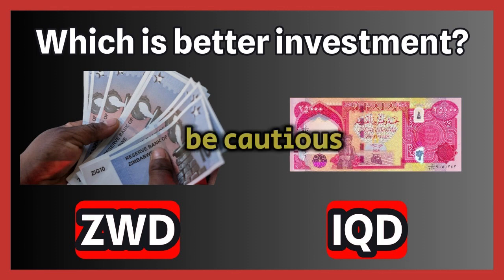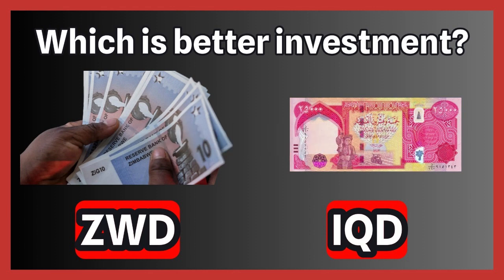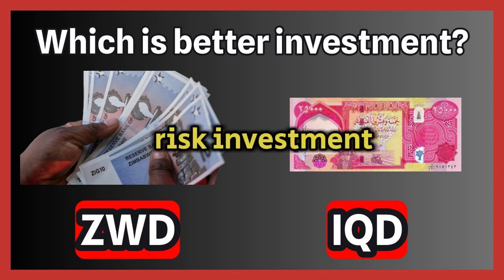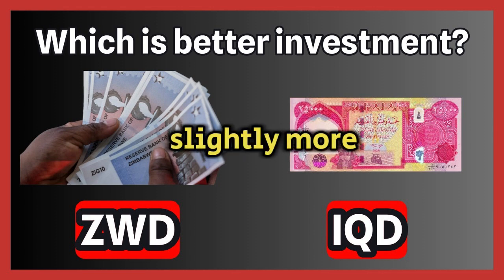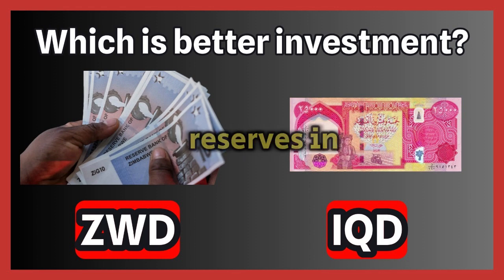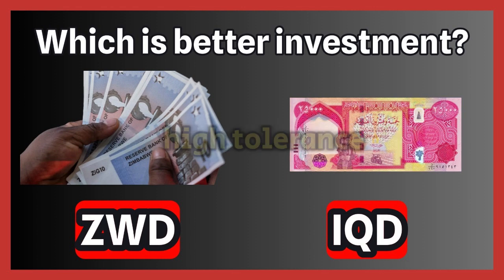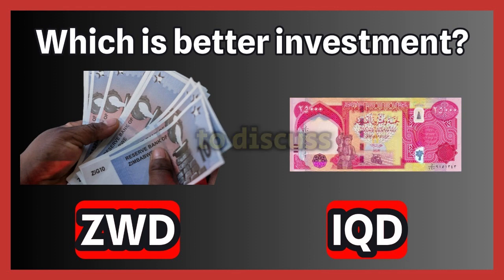Investors should be cautious and consider the broader economic context of each country. In conclusion, both the Iraqi Dinar and the Zimbabwean Dollar present high-risk investment opportunities. The IQD might be slightly more stable due to Iraq's oil reserves and recent stabilization efforts, but both currencies require careful consideration and a high tolerance for risk. Do you have any specific investment goals or concerns you'd like to discuss further?